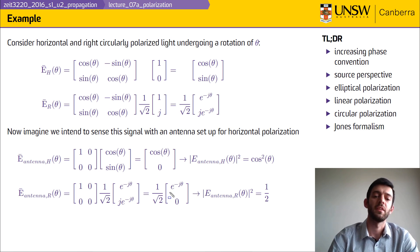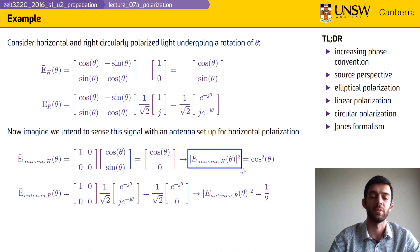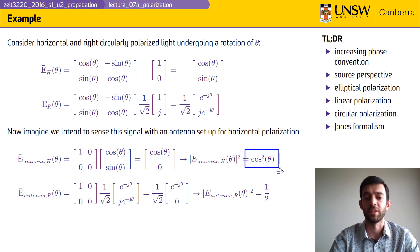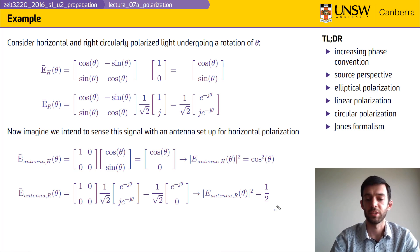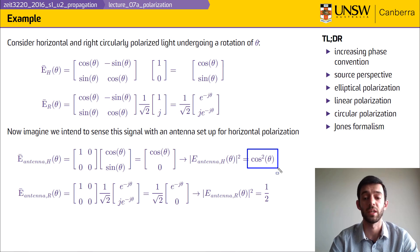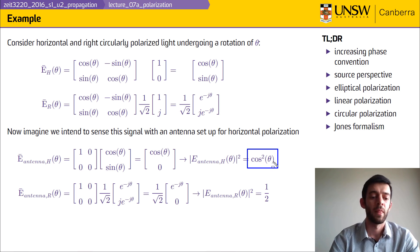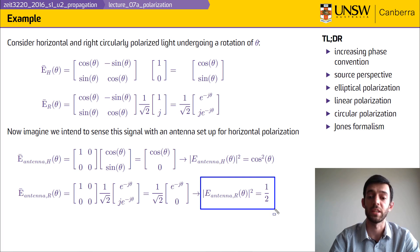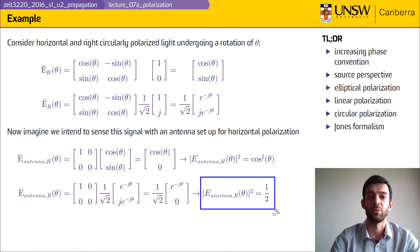We are most interested in the magnitude squared of the electric field, which resembles intensity. The two results are very different: one depends on θ and the other does not. This is an engineering trade-off — cos²θ varies between zero and one, so if the source and receiver are perfectly aligned you get close to unity, which is good. However, if you cannot guarantee alignment, circular polarized light may be better because it ensures you always have one-half the intensity at the detector under rotational transformations.